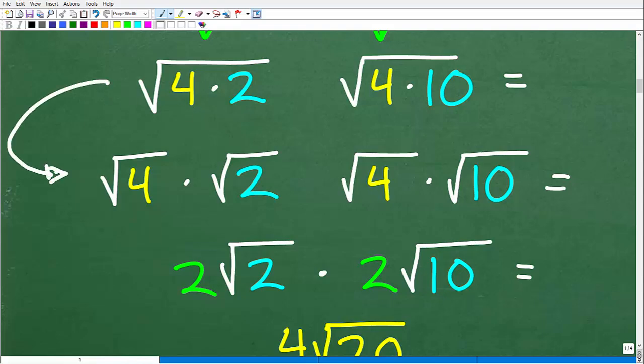What you're allowed to do in algebra is break up these factors with their own individual square roots. So you can see here, instead of one big square root over 4 times 2, I can actually write this as the square root of 4 times the square root of 2.